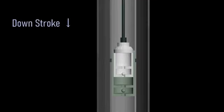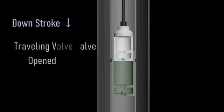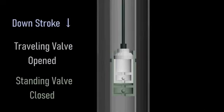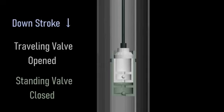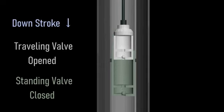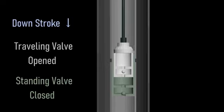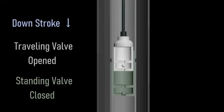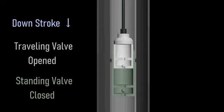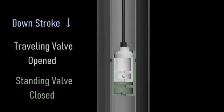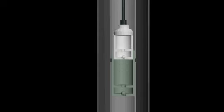During the downstroke, the standing valve is held closed due to the downward force created from the movement of the plunger. However, the traveling valve is pushed open by the underlying fluids inside the working barrel, so they find passage inside the plunger, displacing the overlying fluid towards the surface.